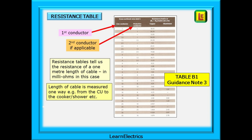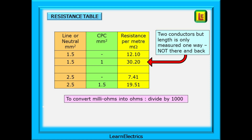The resistance value we should expect can be calculated using the resistance data in table B1 of guidance note 3. The resistance tables tell us the resistance of a 1 meter length of cable in milliohms, and we can calculate the resistance of one conductor or a pair of conductors depending on how we are testing the circuit. Note that we only use a one-way length for the cable even if we are measuring two conductors - the table data takes account of this. For example, table B1 shows that one meter of 1.5mm conductor has a value of 12.1 milliohms, and a one-meter length of 1.5 by 1mm twin and earth is 30.2 milliohms. To convert milliohms into ohms, divide by 1,000.